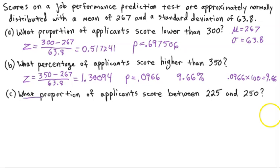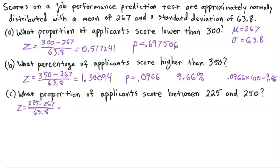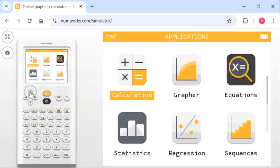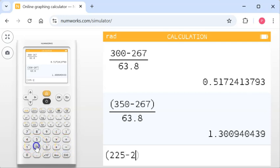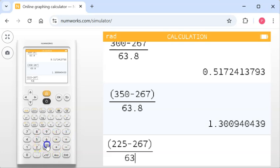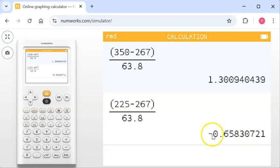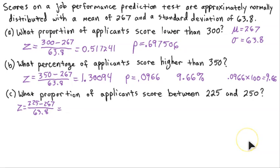Part C asks: what proportion of applicants score between 225 and 250? Since this is a between question, we need two Z-scores. The first Z-score: Z equals (225 minus 267) divided by 63.8. We go to the calculator, use parentheses — (225 minus 267) divided by 63.8 — and execute. Our Z-score is negative 0.658307.